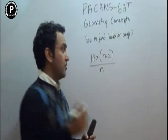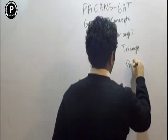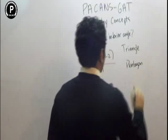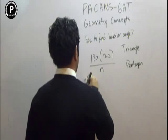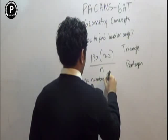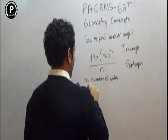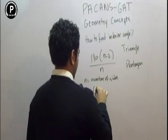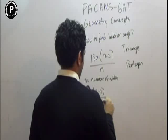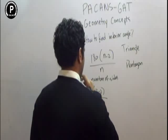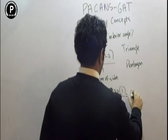For example, take a triangle and take a pentagon. Here, n is the number of sides. For a triangle, there are 3 sides, so it is 180 times (3 minus 2) over 3, which is going to be 180 times 1 over 3.